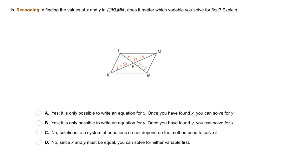And Part B, a reasoning item. In finding the values of X and Y in parallelogram KLMN, does it matter which variable you solve for first? Explain.